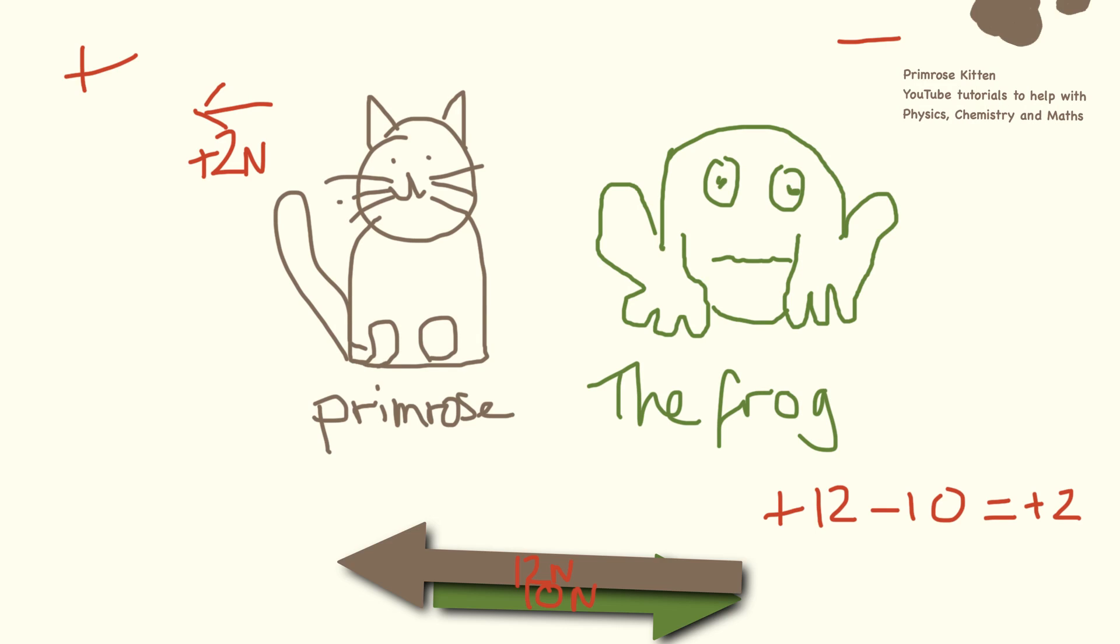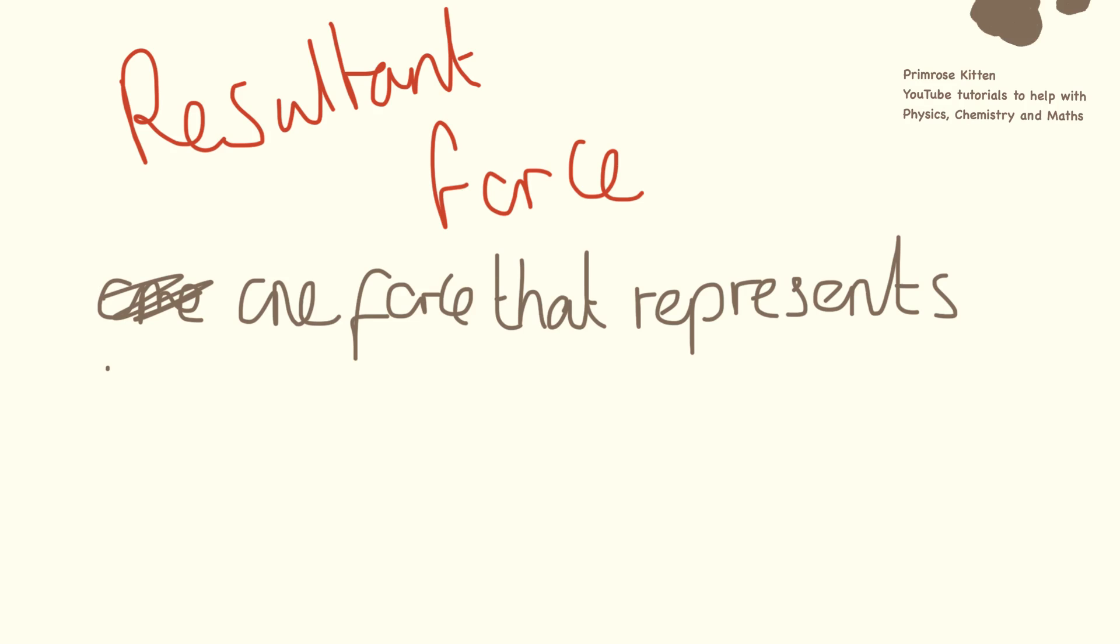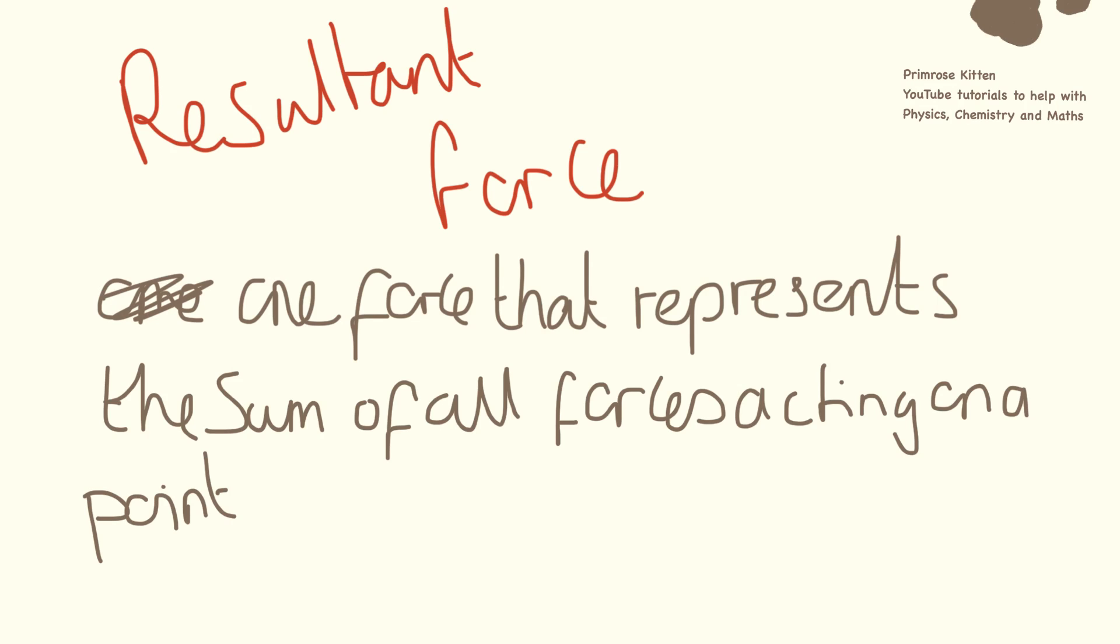So here the resultant force was 2 newtons. By adding the two forces together, we were coming up with the resultant force. Our resultant force is the sum, or one force that represents the sum of all forces acting on a point. So when we added the two forces together, the force that we were left over with was the resultant force.